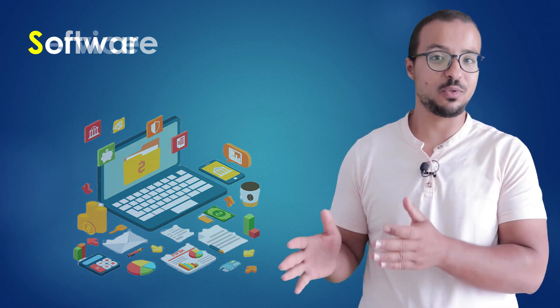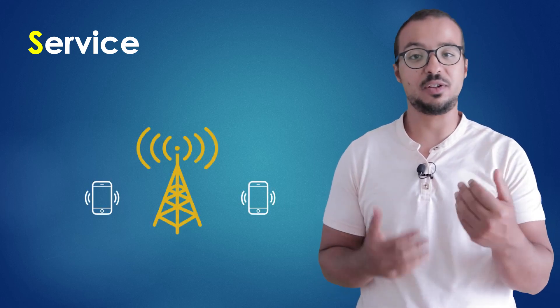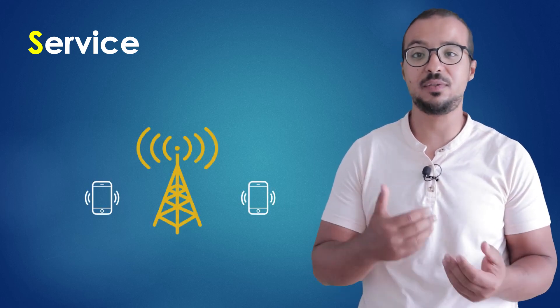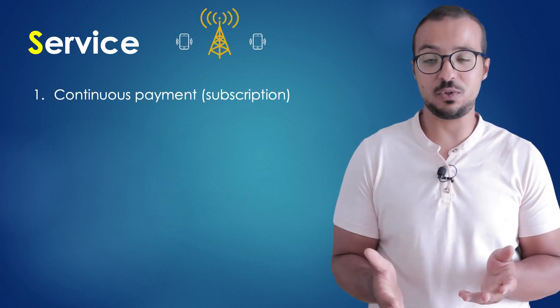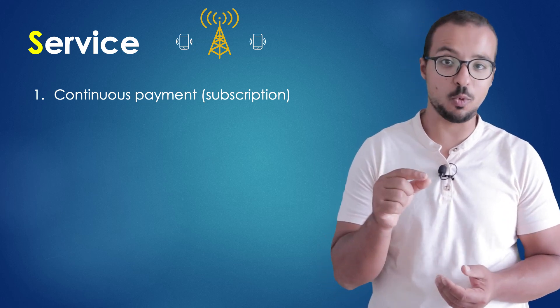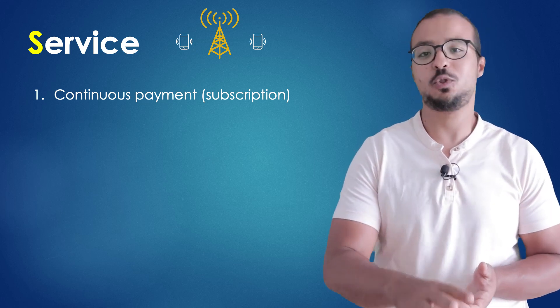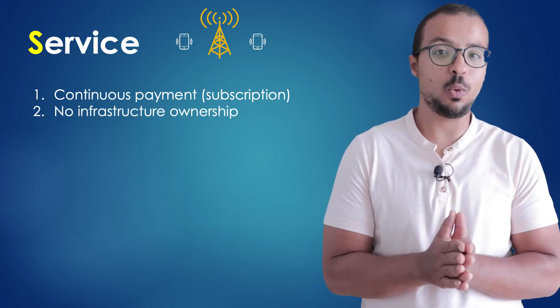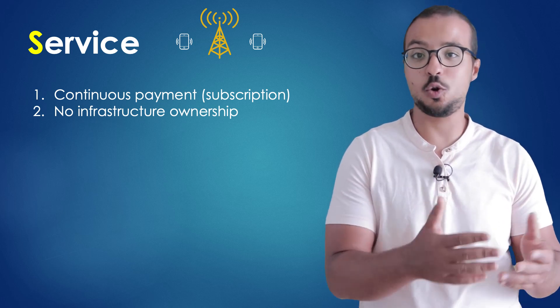Now what about the second part — service? The definition of service can vary. Let's take a simple example from our daily life: the phone service that we use to make and receive phone calls and send and receive text messages. We have to continuously pay for the phone service to use it — either we pay per use or we pay a monthly subscription. And if we stop paying, we stop receiving the service. We also don't own any of the infrastructure needed, like the communication towers.